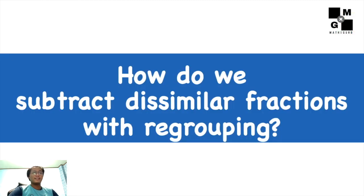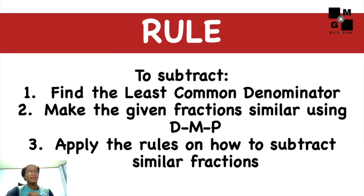So how do we subtract similar fractions with regrouping? First, find the least common denominator. Second, make the given fraction similar using the DMP technique. And last, apply the rules to subtract the similar fractions.